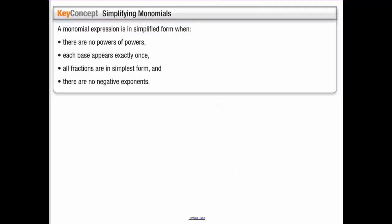Okay, when you are simplifying monomials or simplifying expressions, there's a few things that you guys need to keep in mind. There's no powers of powers, those are all simplified. Each base is only going to appear once. All fractions are in simplest form, so you're reducing all your fractions, and there are no negative exponents.